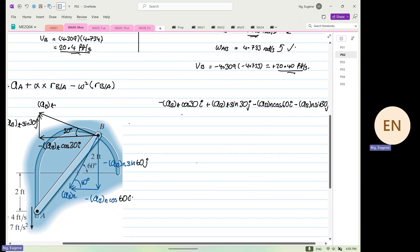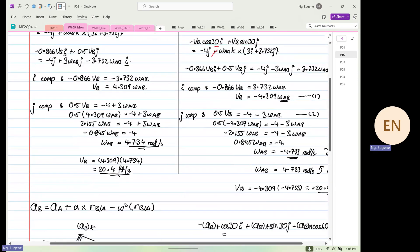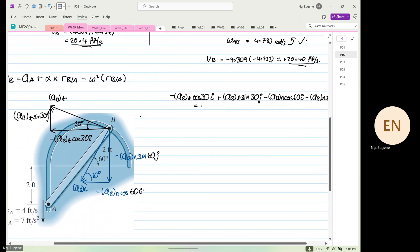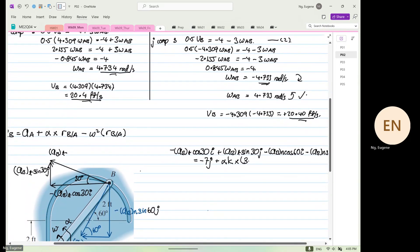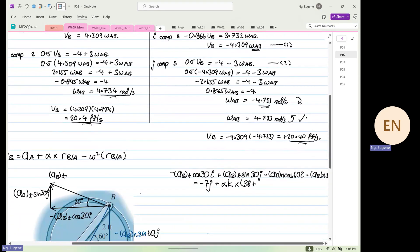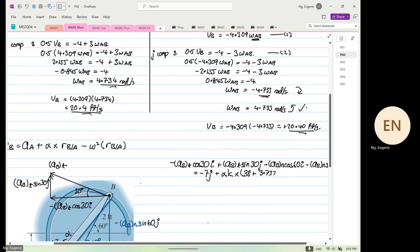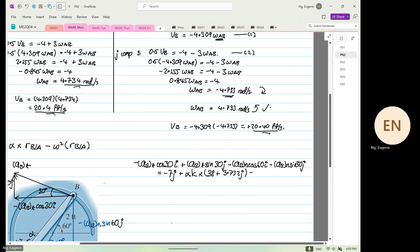Then after that, this whole thing will be equal to what? Acceleration at point A, I really can't remember, minus 7 J. I'm going to assume alpha going in the anticlockwise direction because omega is also in the anticlockwise direction. Plus by alpha K cross R B dot A. So R B dot A, what is the value? 3 I, plus by 3.732 J. And then minus omega squared, which is 4.734 squared, and then multiply by the whole thing.